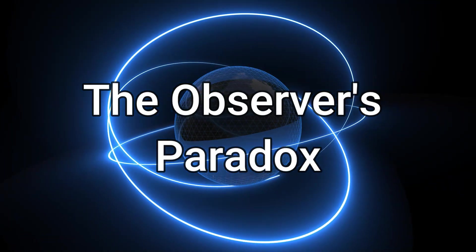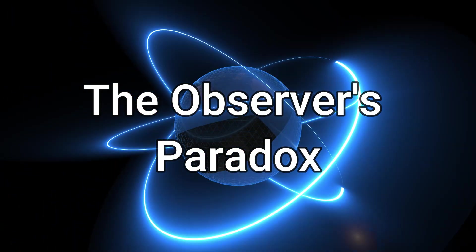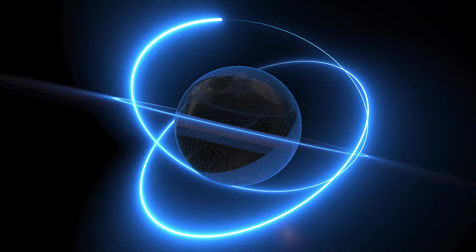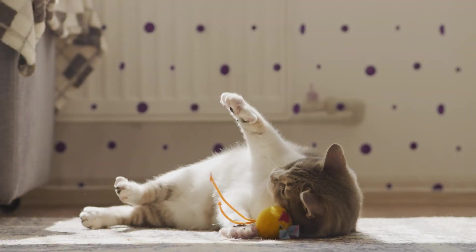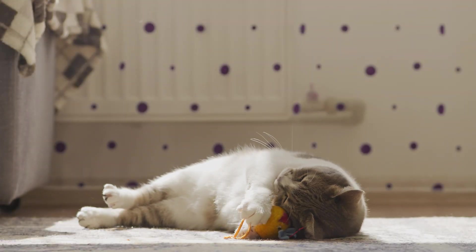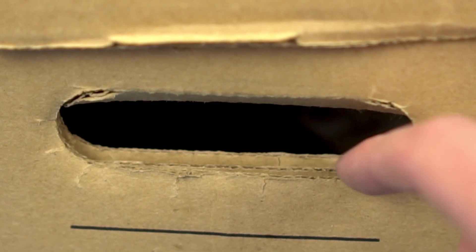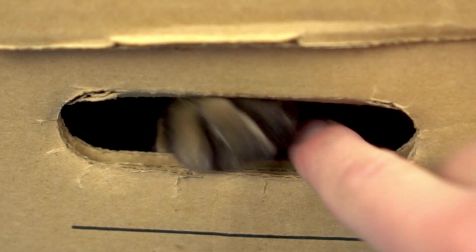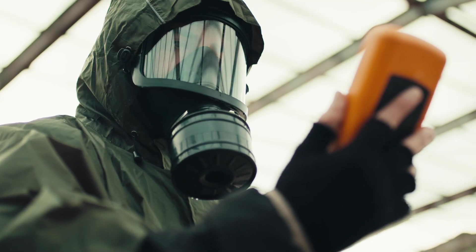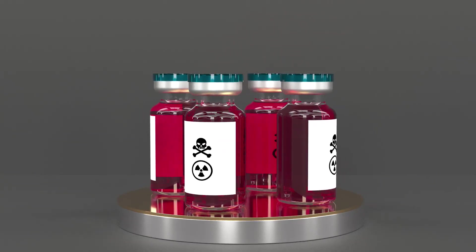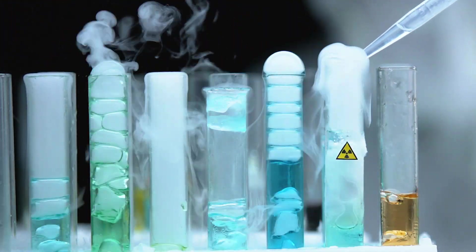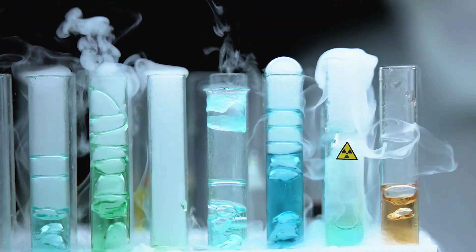The Observer's Paradox. The Observer's Paradox, a peculiar facet of quantum theory, revolves around Schrödinger's famous thought experiment involving a cat that exists in a superposition of both alive and deceased states. In this experiment, a cat is sealed within a box alongside radioactive material, a Geiger counter, a hammer, and lethal poison. The radioactive material has a 50% chance of decaying.